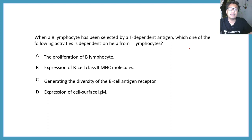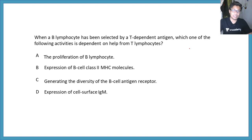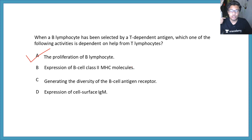When a B lymphocyte has been selected by a T-dependent antigen — there are two types of antigen: thymus dependent and thymus independent — which of the following activities is dependent on T lymphocytes? The options are: proliferation of B lymphocytes, expression of B cell class 2 MHC molecule, generating diversity of B cell antigen receptor, or expression of cell surface IgM. The correct answer is proliferation of B lymphocytes. Whenever there is T lymphocyte-mediated activation of B lymphocytes, B cells start proliferating, eventually differentiating towards plasma cells — specific antibody-producing plasma cells. During that process, somatic hypermutation and class switching occur.